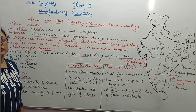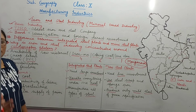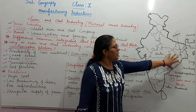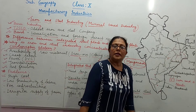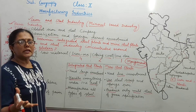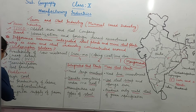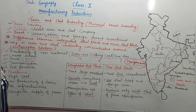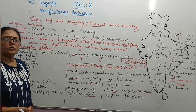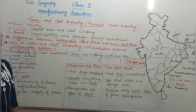दूसरी problem है low productivity of labor। यह densely populated area है, labor आसानी से मिल जाती है, लेकिन उनकी productivity अच्छी नहीं है — यानि काम उतना अच्छा नहीं होता। तीसरी problem है poor infrastructure — steel plants बहुत पुराने हैं, technology भी पुरानी है, और इससे कहीं न कहीं समस्याएँ ज़रूर आती हैं।